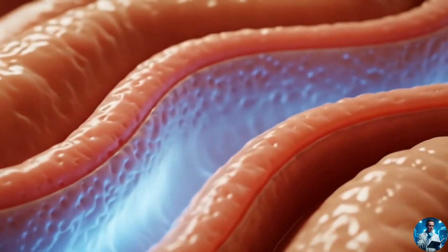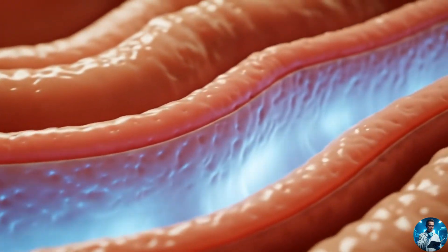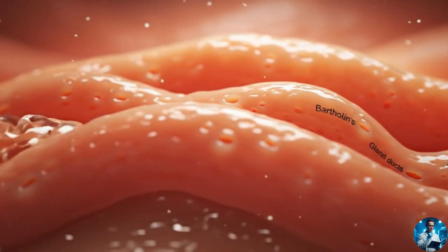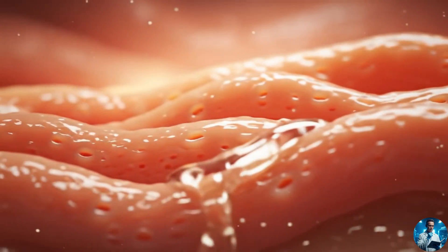Zooming in on the vestibular area, the hymenal rim becomes clearer. It's a thin elastic mucosal layer, partially encircling the vaginal opening.